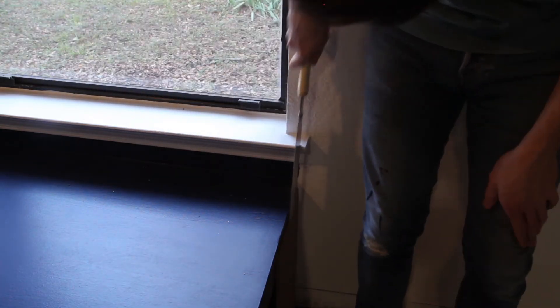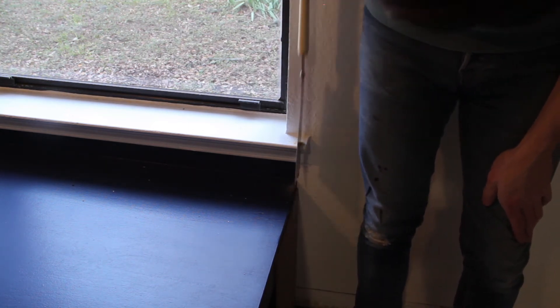And then I also had to trim the edge of the windowsill to make it flush with the edge of the banquette. And to do that I used a Japanese pull saw.